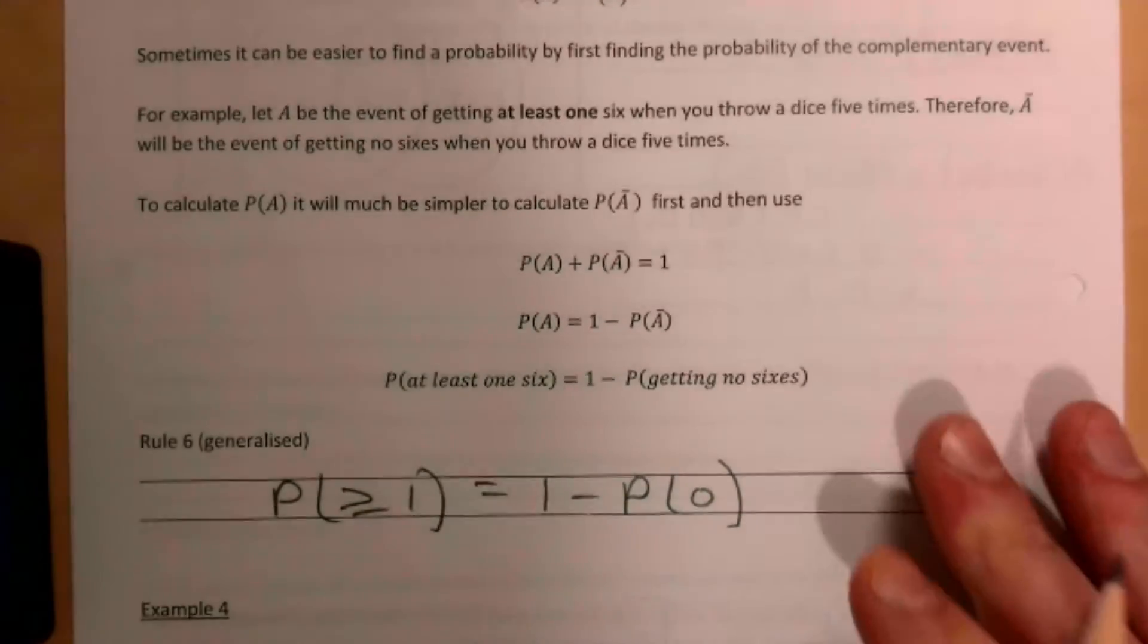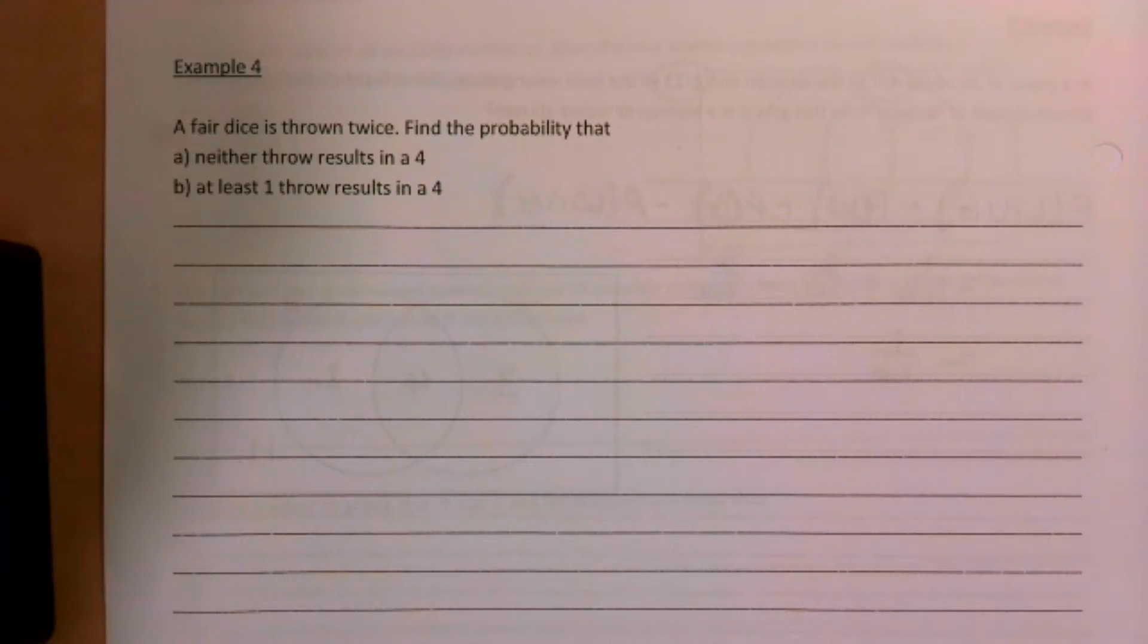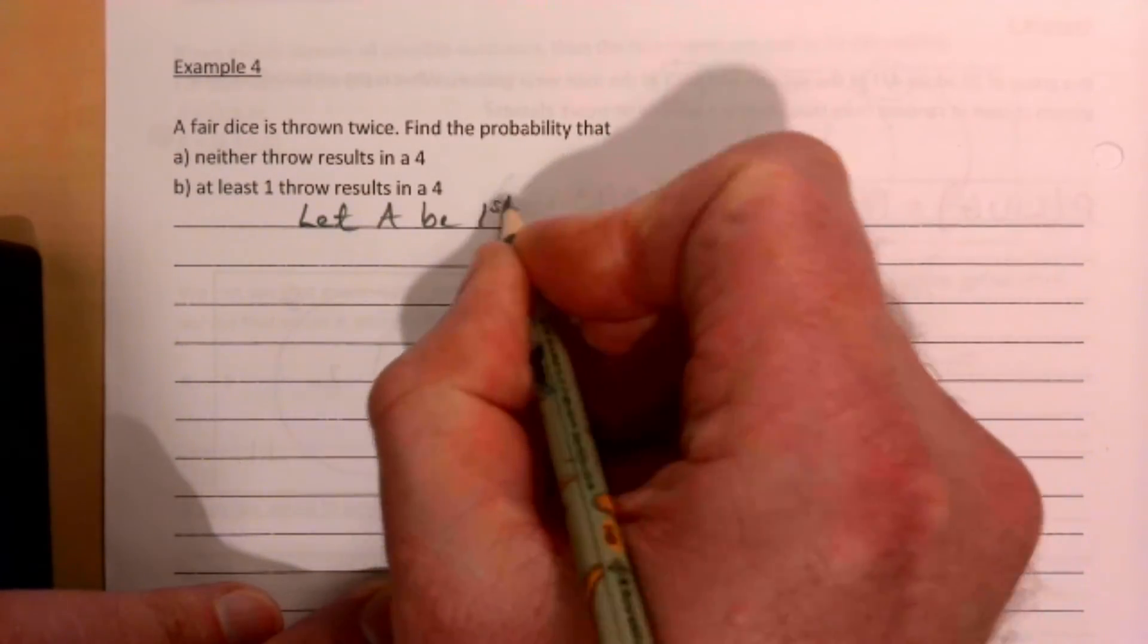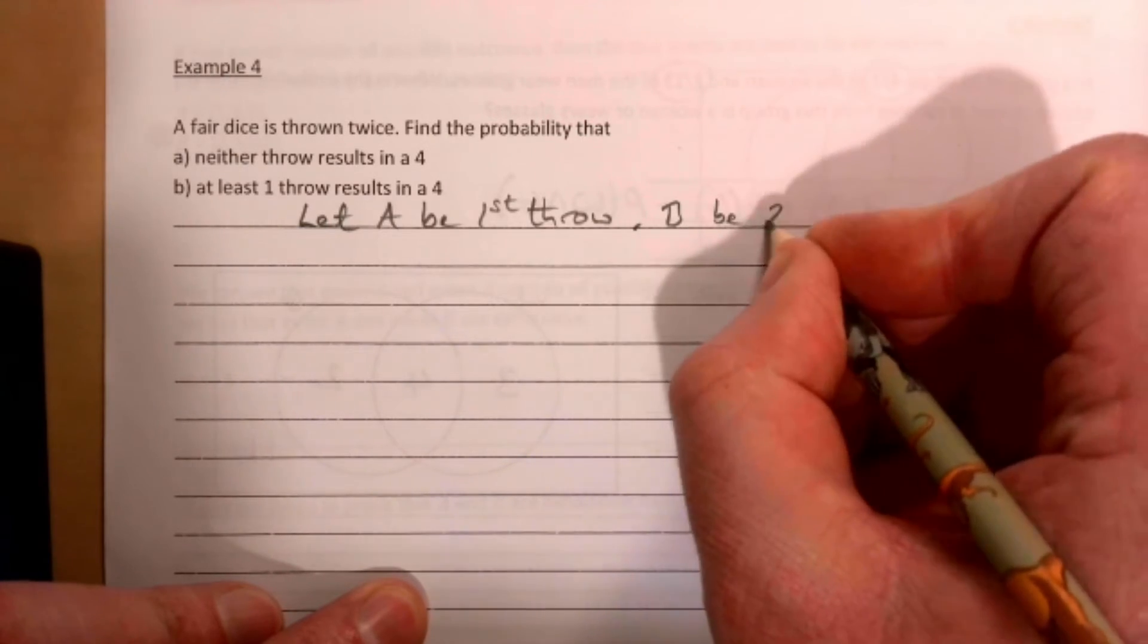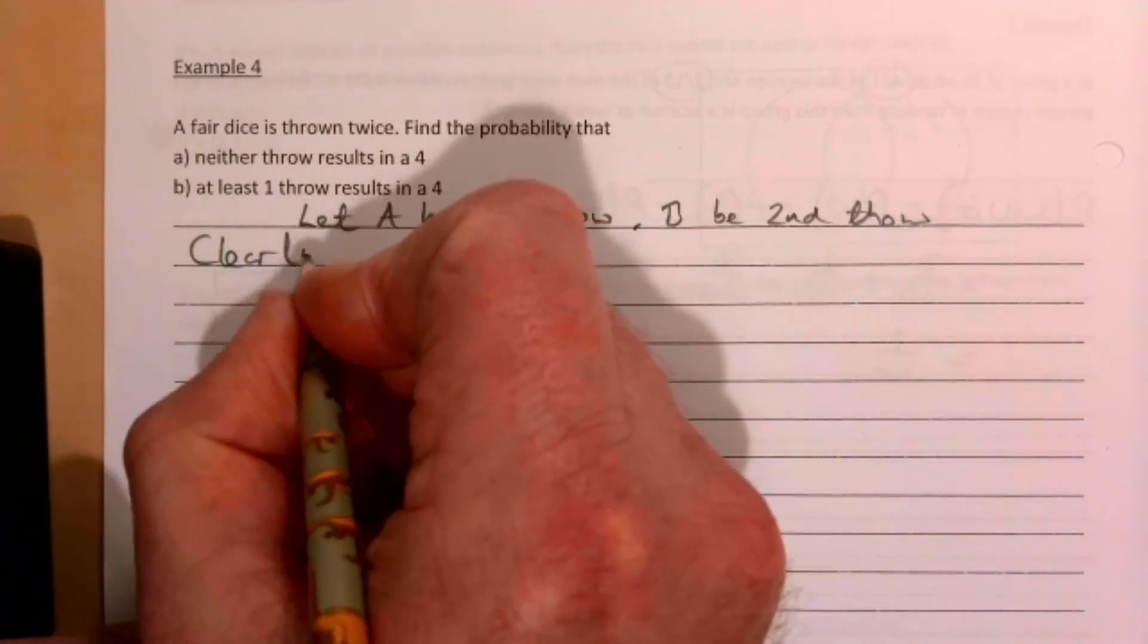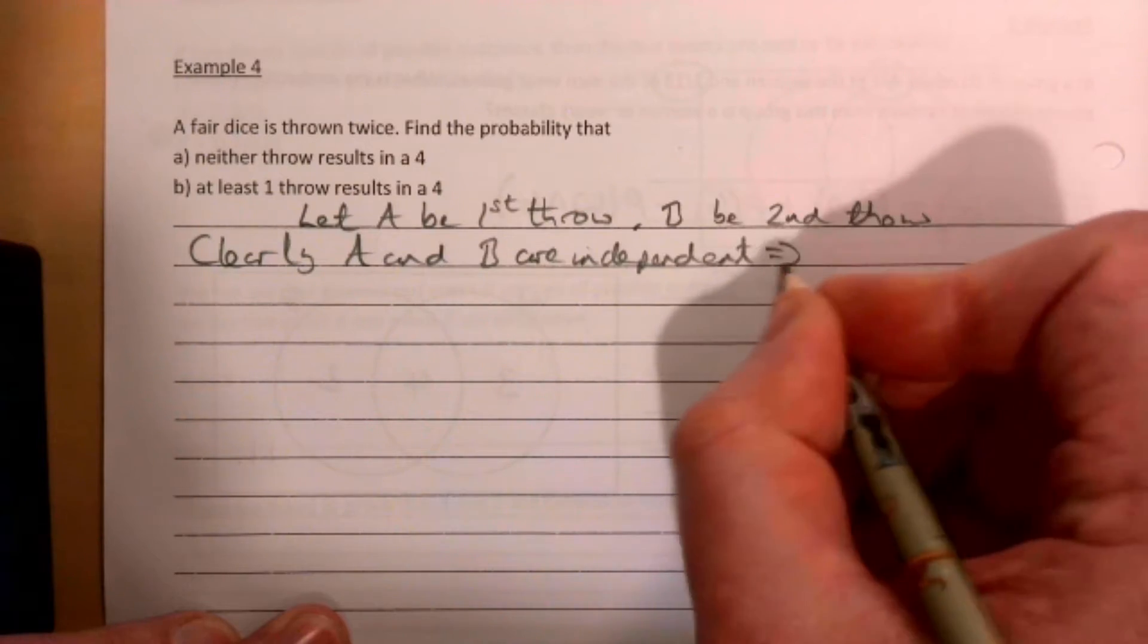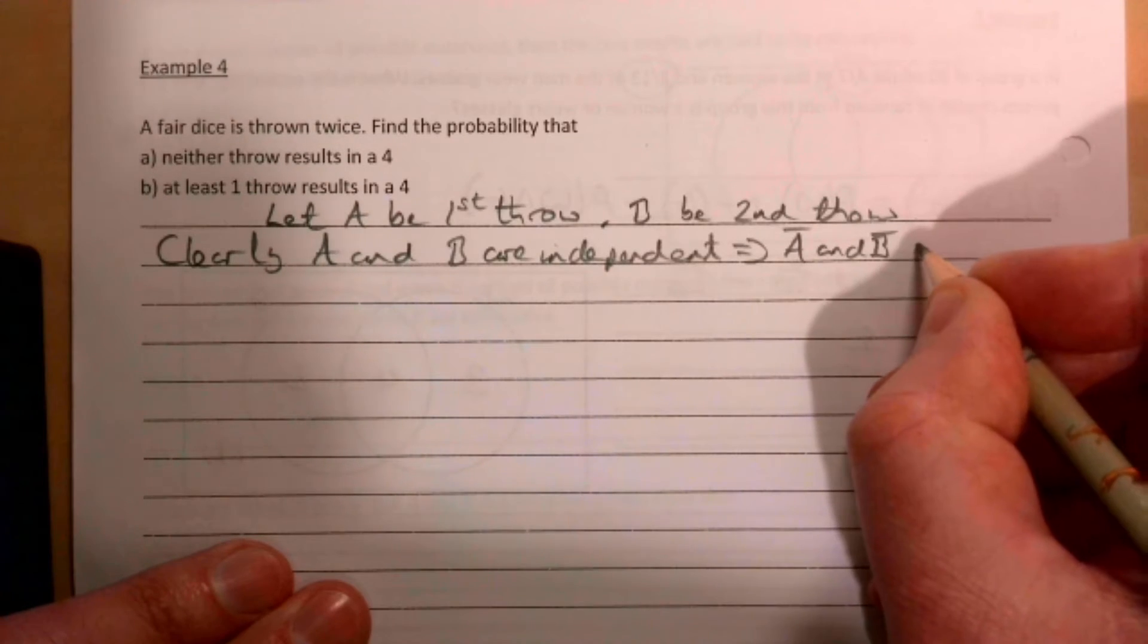Let's take a look then at Example 4. So what we're going to do is we're going to let A be the first throw and B be the second throw. It's worth saying that clearly A and B are independent, as in one's not affected by the other. And also then not A and not B are also independent.